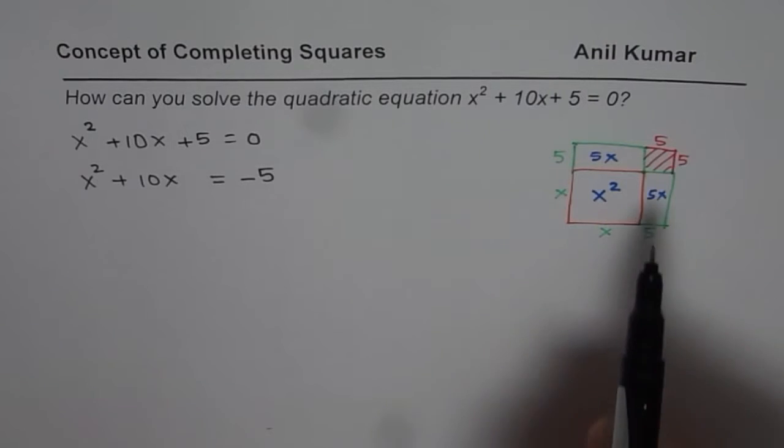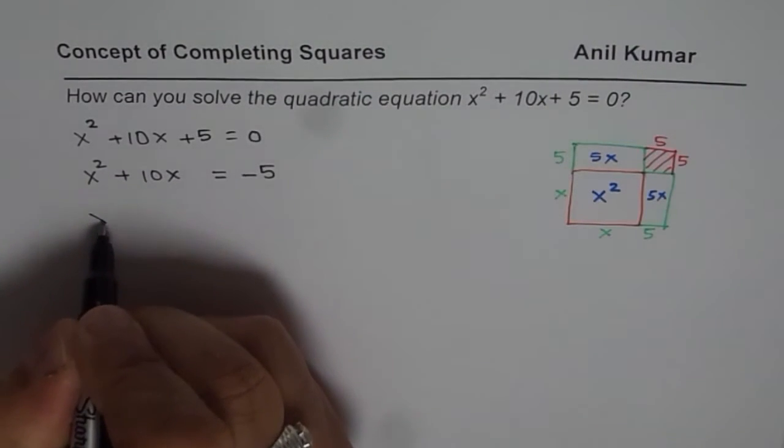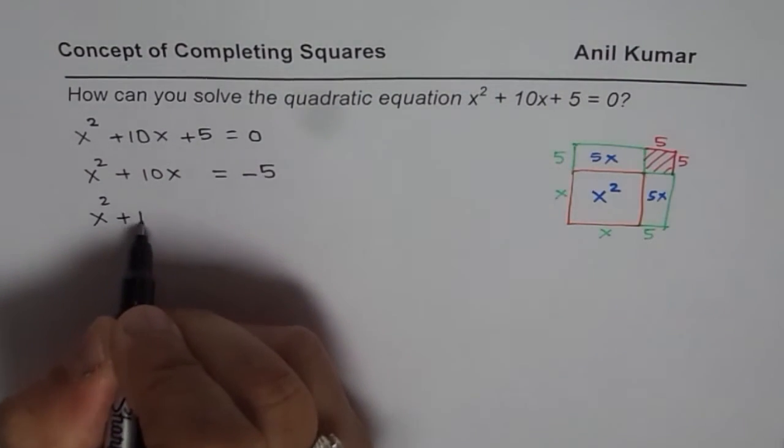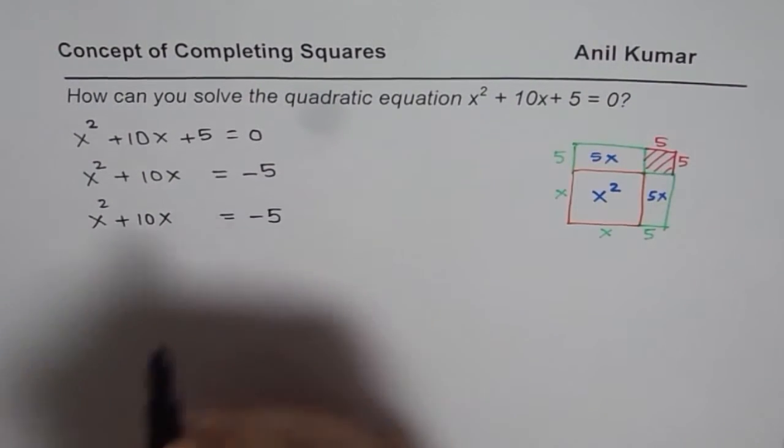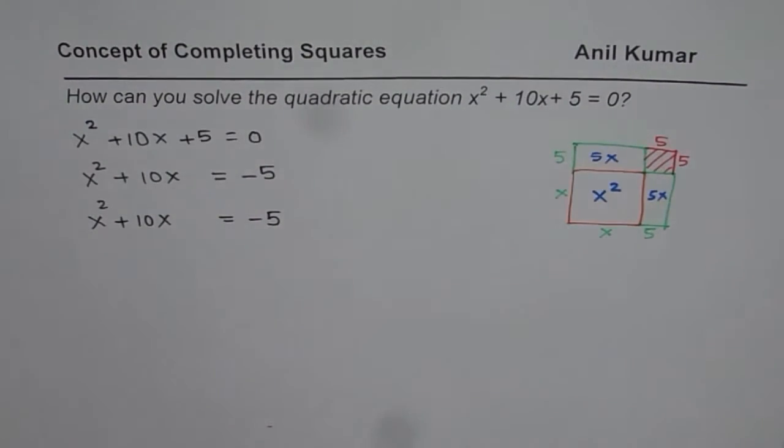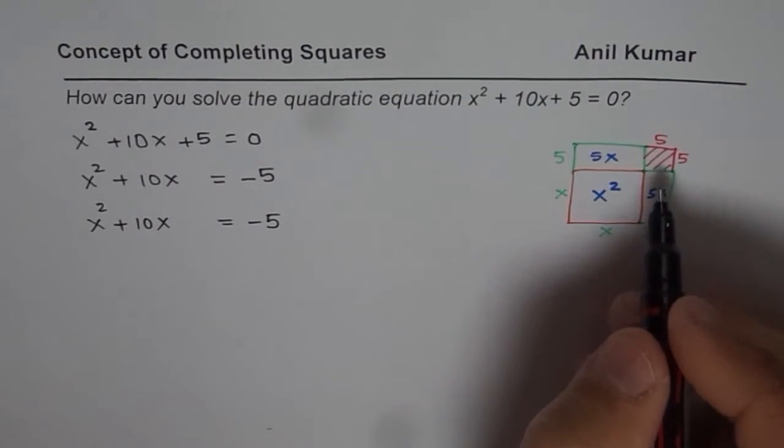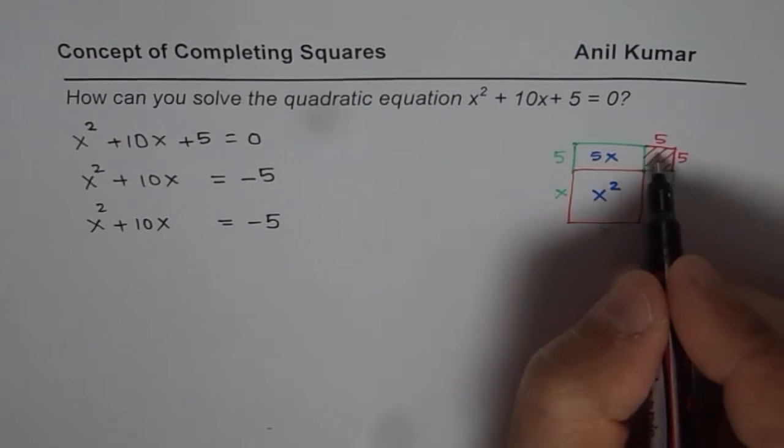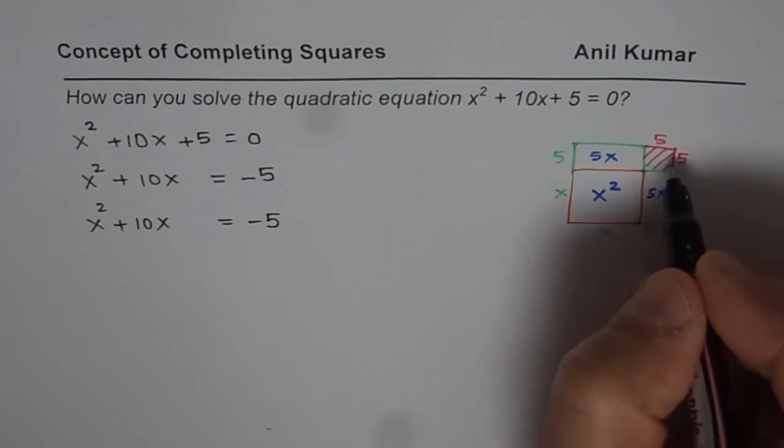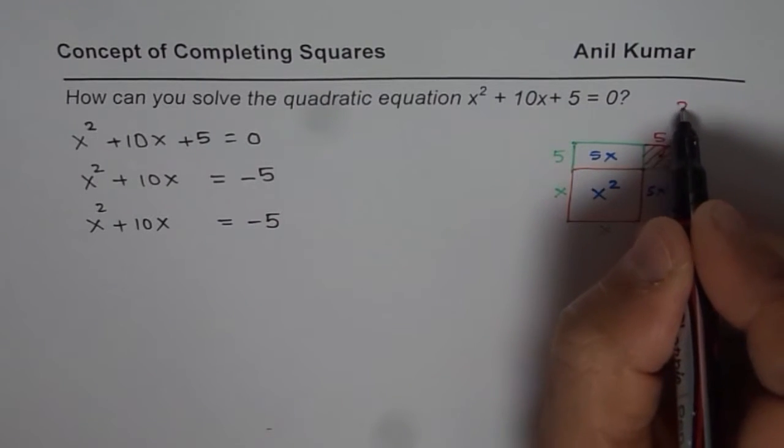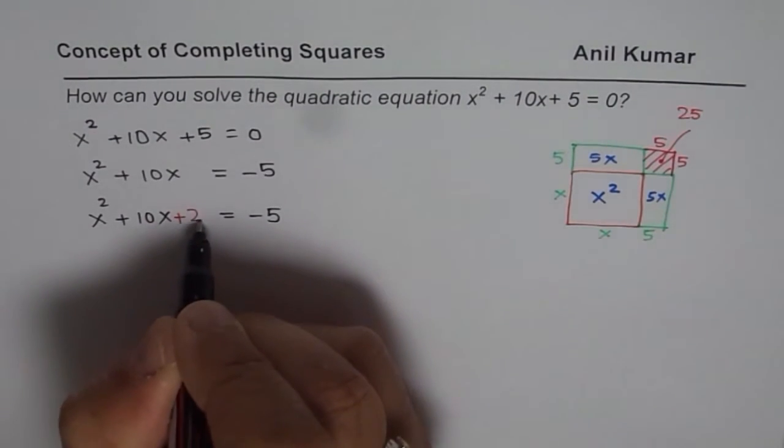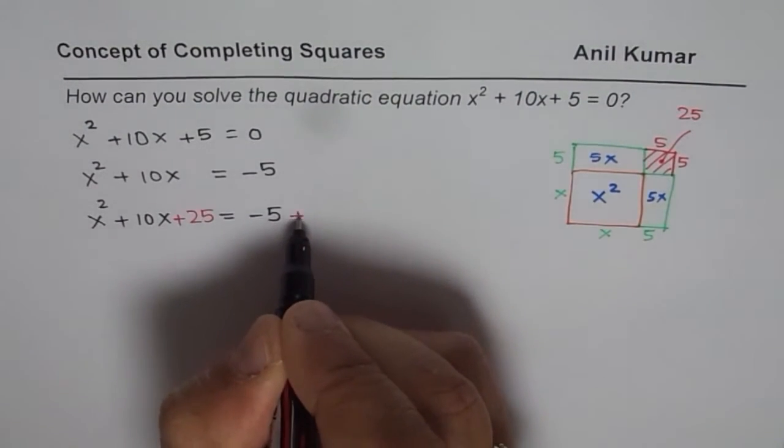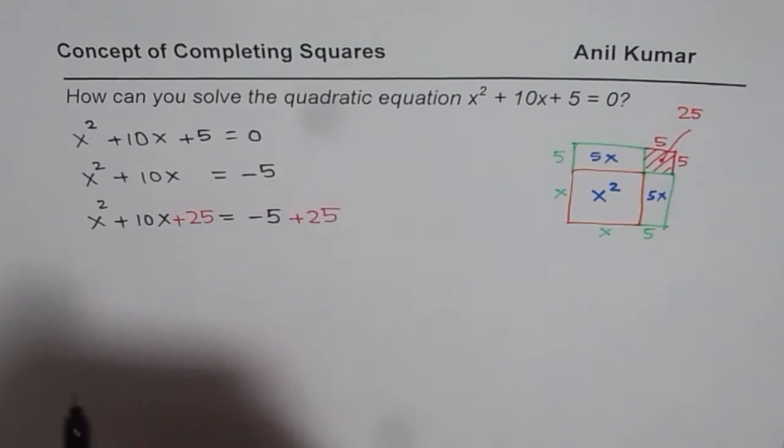Let's get back to the equation: x² + 10x = -5. To complete the square, we add this piece whose area is 5 × 5 = 25. So let me add 25 on both sides.